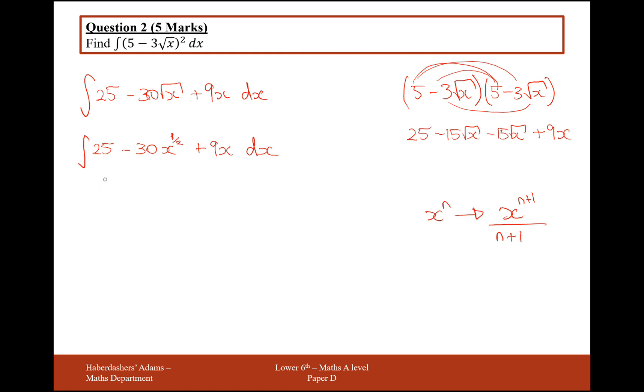So the 25 here, that will integrate to 25x. The minus 30x to the half here, so increase the power by 1, so it's now 3 over 2. So it's going to be 30x to the 3 over 2, and then divide by 3 over 2,